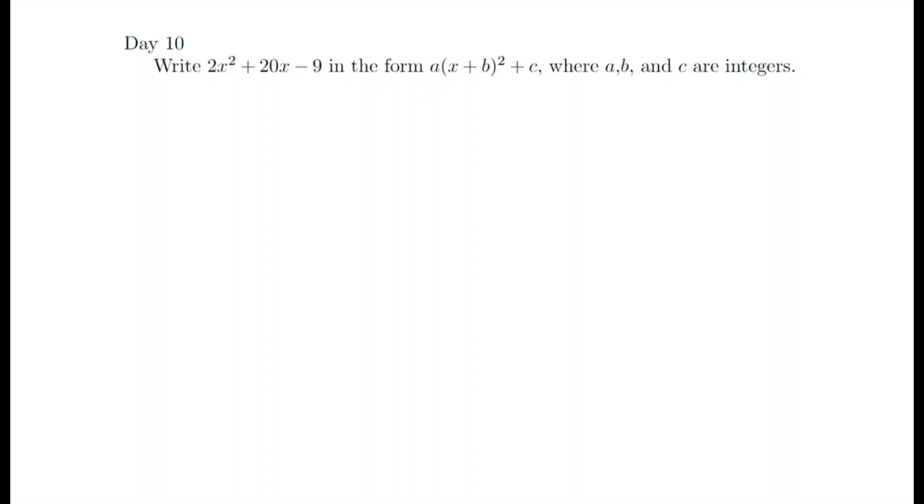So today's question is 2x squared plus 20x take away 9, and we're asked to write it in the form of a bracket x plus b all squared plus c, where a, b, and c are integers.